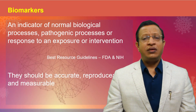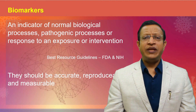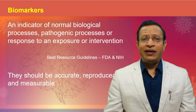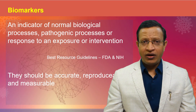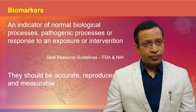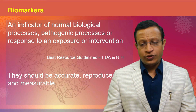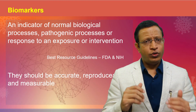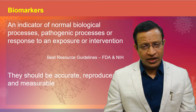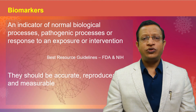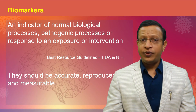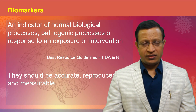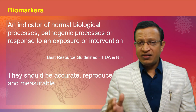There is also a good definition from the FDA and NIH resource book. An indicator is basically defined as an indicator of normal biological process, pathogenic process, or a response to any exposure or intervention. Once you expose to certain things, the biomarkers should be accurate, reproducible, and measurable — so that we can measure them and say that this person is resilient.